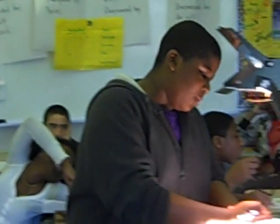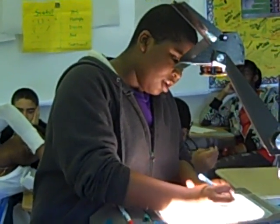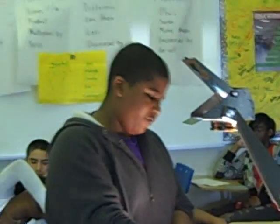All right, the problem is Ms. Ross is 20 years less than triple her brother's age. Write an equation to match the following situation and identify the variables.